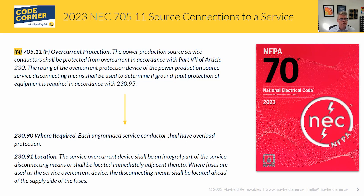The 2023 language says power production source service conductors shall be protected with overcurrent in accordance with Part 7 of Article 230. It also goes on to talk about ground fault protection depending on ampacity, referencing 230.95. Part 7 of Article 230 is service equipment overcurrent protection, covering sections 230.90 to 230.95, at the very end of Article 230.